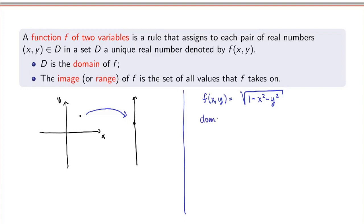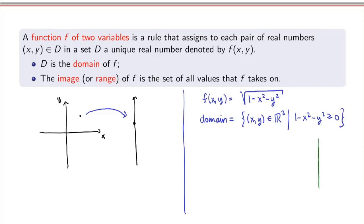We can ask what is the domain and the range of the function. The domain would be all pairs of real numbers x and y such that the argument of the square root is non-negative: 1 minus x squared minus y squared is greater than or equal to zero. This is the inside of a circle. In the xy-plane, you would have a circle of radius one, and the domain is all the points inside that circle.